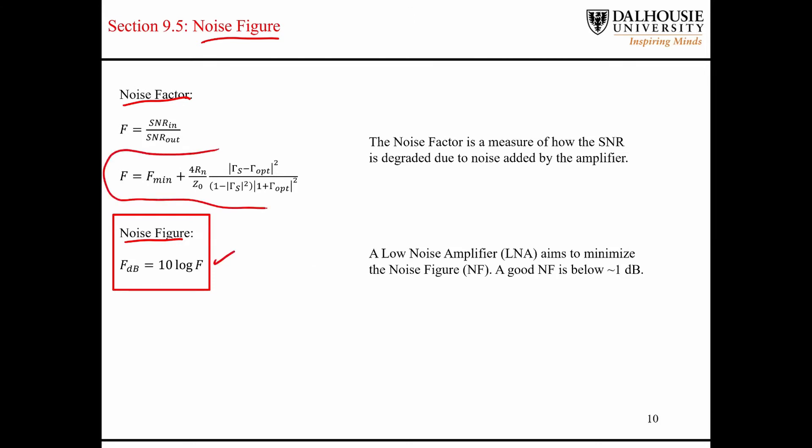So this expression here for the noise factor consists of a bunch of parameters: fmin, rn, the characteristic impedance of the system, gamma opt, like I mentioned earlier on the Smith chart. These are all things that are theoretically defined in the data sheet for a given transistor.